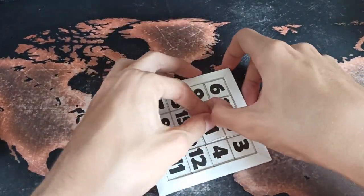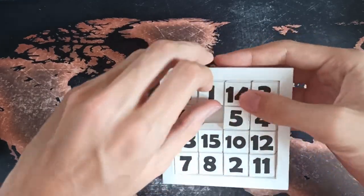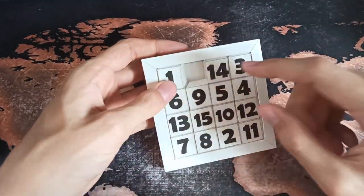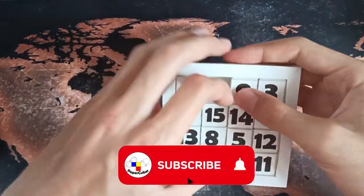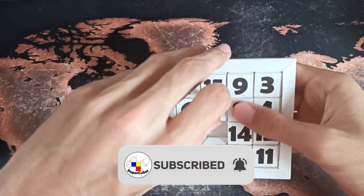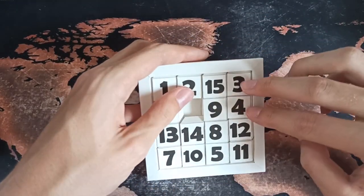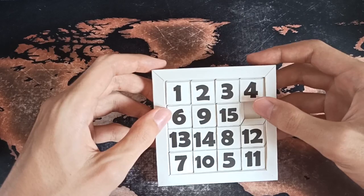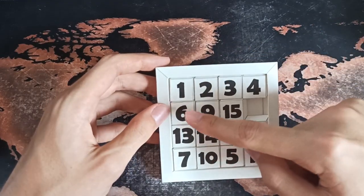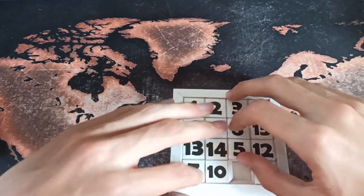So at first I'm going to put 1, 2, 3 and 4 into place and then I'm going to take care of 5, 9 and 13. Okay, so now this first row is complete and now I'm going to solve the first column.